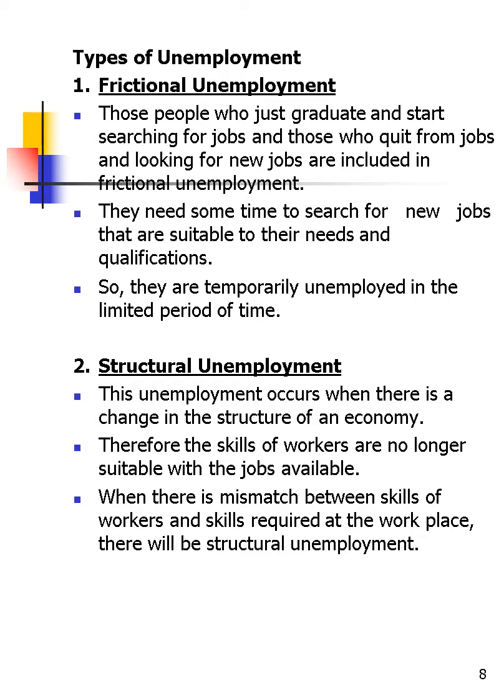The types of unemployment are a very common exam question — you need to know at least four types. The first is frictional unemployment, which refers to graduates who just finished and are searching for a job, and those who quit a job and are looking for new ones. They need more time to search based on their qualifications. The second is structural unemployment, which occurs when there is a change in the structure of the economy.